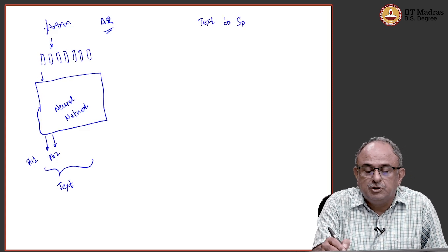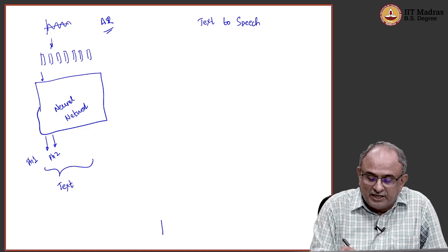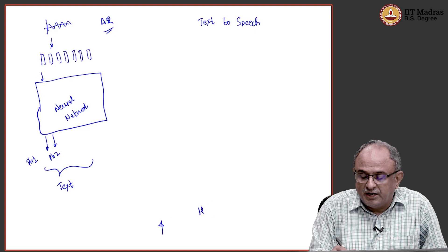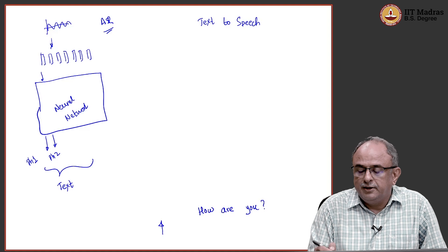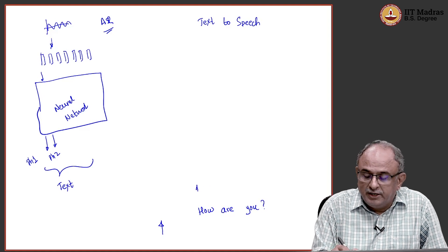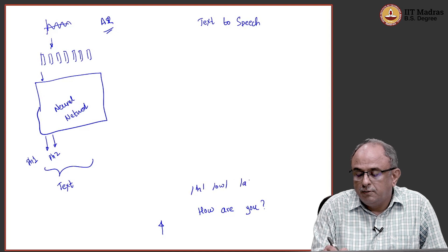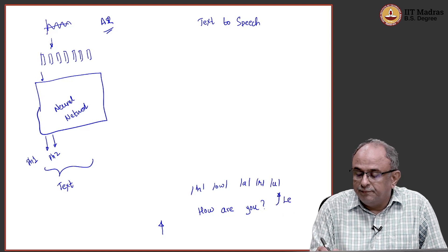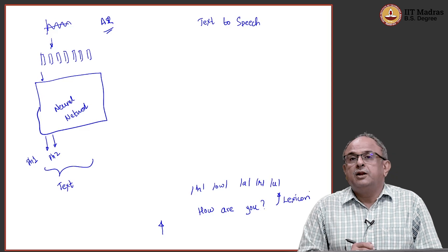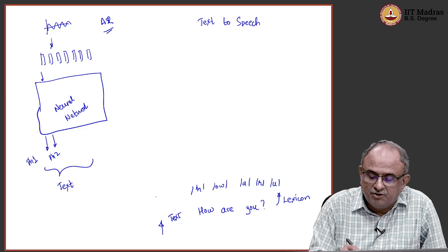In text to speech, what do I do? In text to speech, I am going to go in the reverse direction, that is all. So, you give me a sentence like how are you. Then I have to now convert it into a sequence of phonemes. Now, this is done through lexicon. This is a text, this is the phonemes.